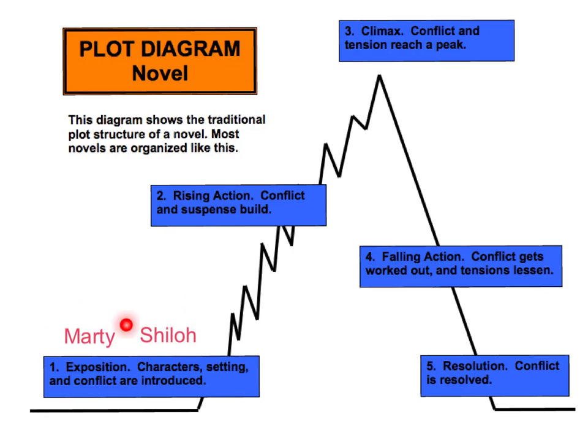In our book, this is where we meet Marty. We also meet Shiloh and Judd Travers. Although we will learn more about the setting as the story progresses, we first learn on page 2 that the story takes place in West Virginia. The conflict is also introduced in Chapter 1: Shiloh finds Marty, Marty wants to keep him, but Marty's dad insists on taking Shiloh home to Judd Travers. Marty is sure that Judd is mistreating Shiloh.